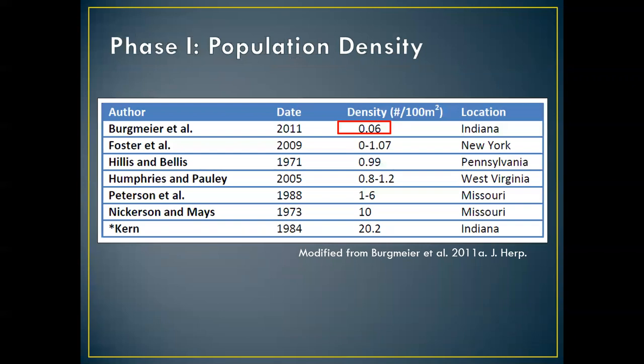Looking at population density — reported as number of individuals per hundred square meters of surface river — the density of Hellbenders in Indiana was 0.06, which is two orders of magnitude lower than any other location reported in the country. Hellbender populations in Indiana are certainly struggling, very rare, and their densities are incredibly low. Individuals are not regularly interacting with each other, and in fact we haven't had successful recruitment or reproduction in Indiana since 1988. We've received a few nests here and there, but those nests never hatched and we never got any larvae from them — so no recruitment.